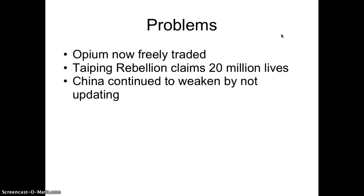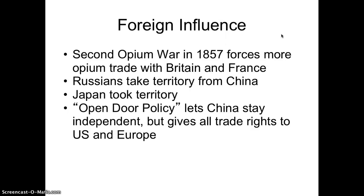Unfortunately, resisting modernization had a downside: it's hard to break away from Western dominance when you are not industrialized like they are. Foreign influence only got tighter, and pressure on China increased. A second Opium War in 1857 forced more opium trade with Britain and France. Russia took Manchuria — the northeastern portion of China, and interestingly the homeland of the Qing Dynasty — because China was very weak. Japan also took territory from China, annexing the Korean Peninsula, which had been under Chinese rule.